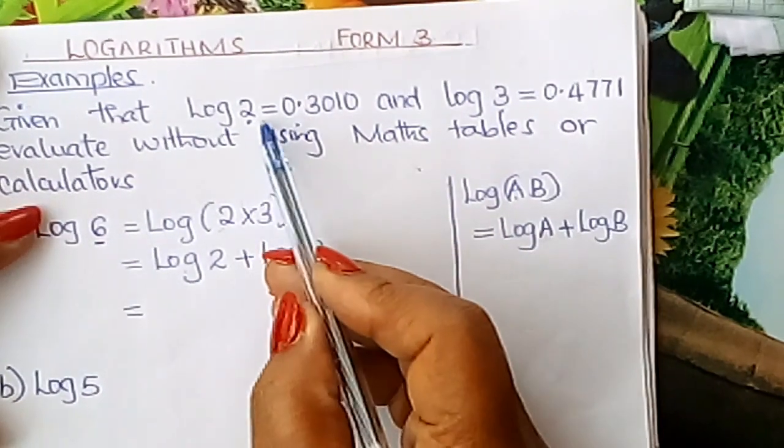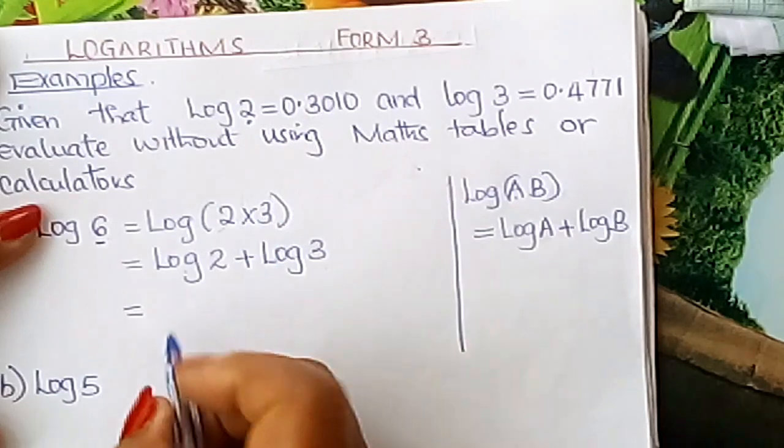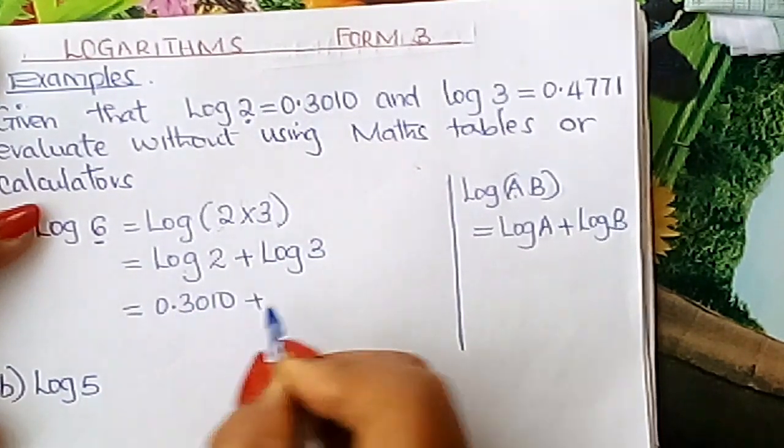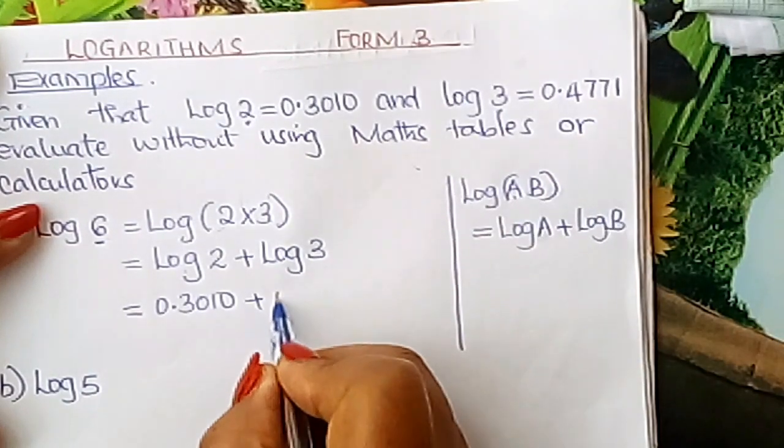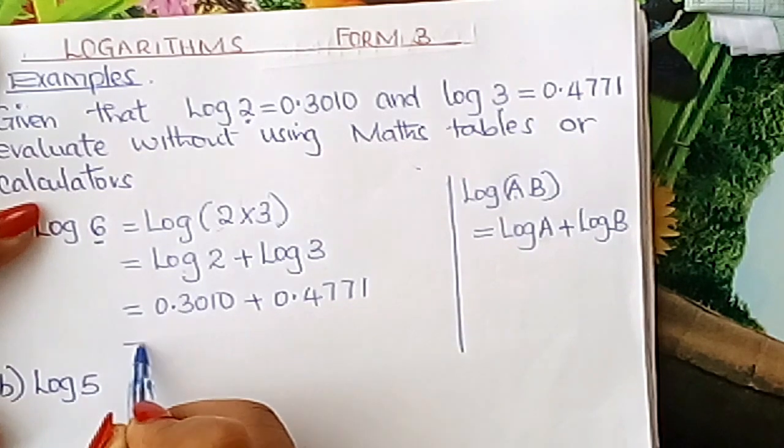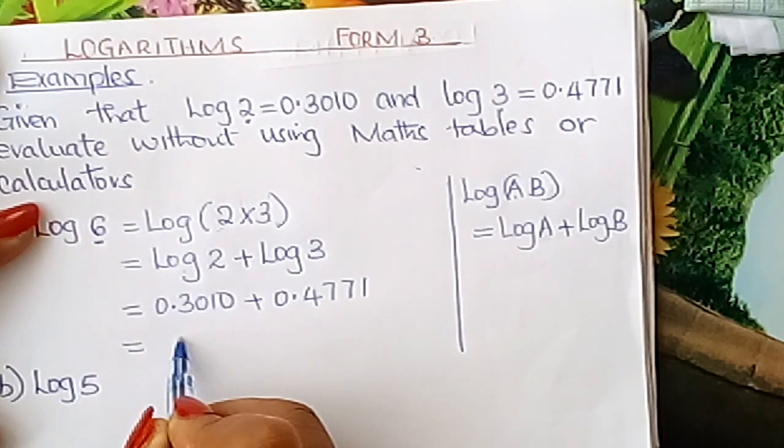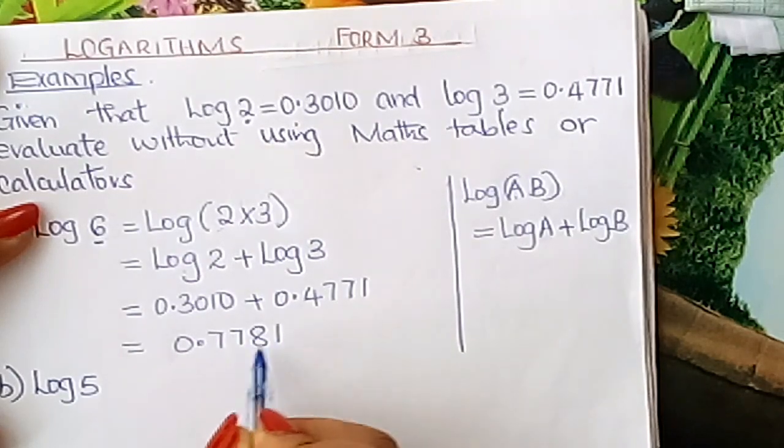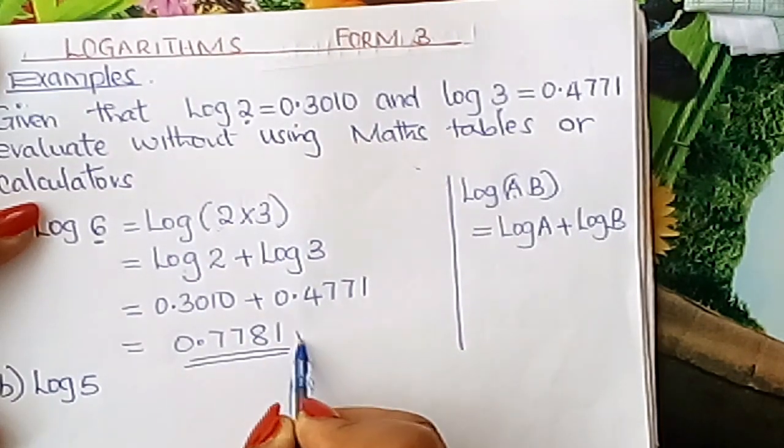From there you come and fix your logs. Log 2 is 0.3010 right there, plus log 3 is 0.4771. You add this learner accurately. You should get 0.7781. There we are.